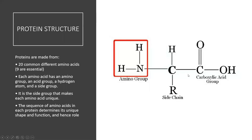Proteins are made of 20 common different amino acids. Nine are considered essential, leaving 11 non-essential, or conditionally essential as we like to say. Each amino acid has an amino group, an acid group, a hydrogen atom, and a side group. It's this side group — shown here in the red box — that gives each amino acid its unique structure. The sequence of amino acids in each protein determines its shape and function, and hence the role that it plays in the body.